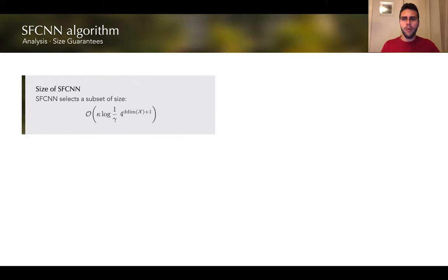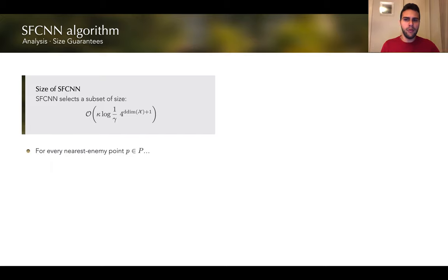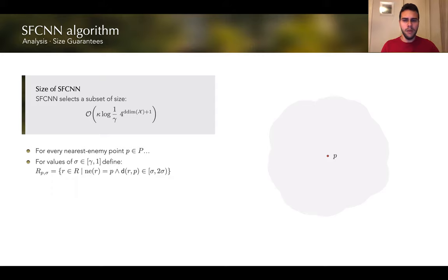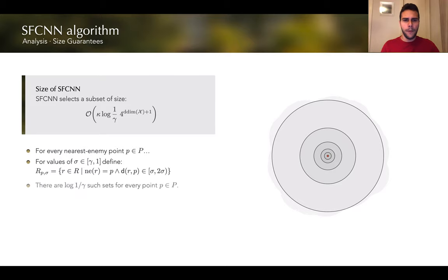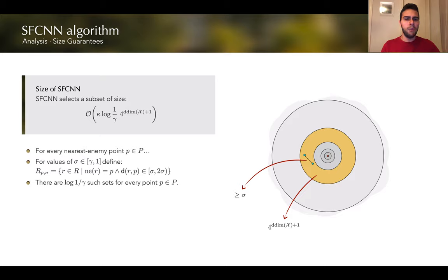In a similar way, we can upper bound the size of the selected subset by SFCNN in terms of kappa, the number of nearest enemy points. We do this by a counting argument on every nearest enemy point of the training set. We consider all points whose nearest enemy is some given point p, split this set into a logarithmic number of subsets, and for each subset show a lower bound on the distance between any two points selected by SFCNN. This implies a constant number of points per subset assuming constant dimension, yielding the same result.